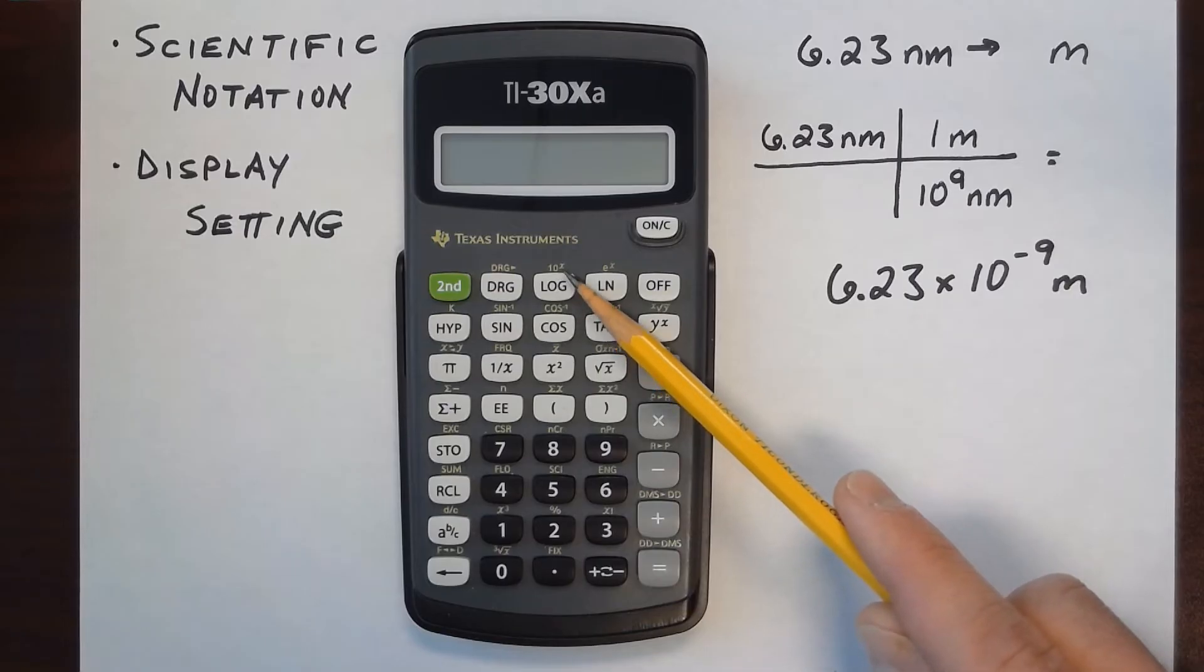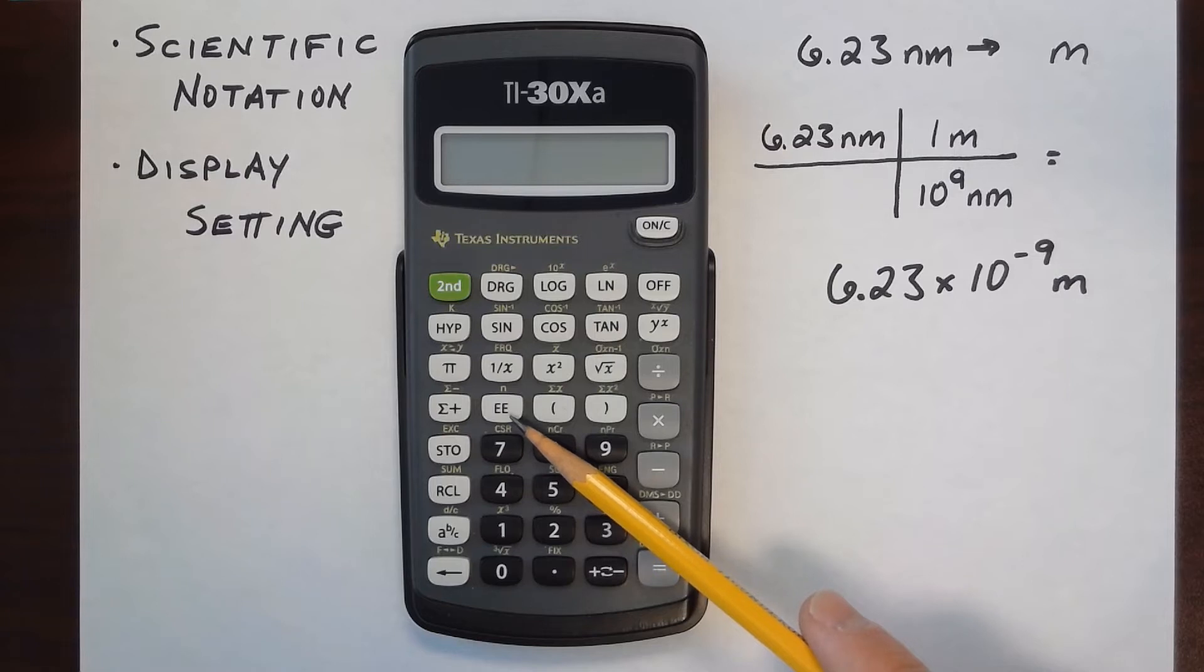The 10 to the X button takes 10 and raises it to a certain power. The EE button will connect the scientific notation with the number.